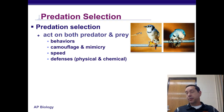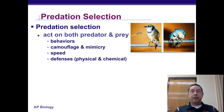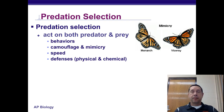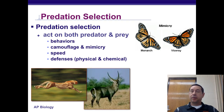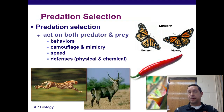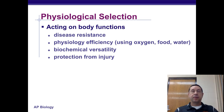A blue jay eats the butterfly, gets sick, and learns not to eat that type again. Mimic species might look like the bad-tasting butterfly without producing the bad-tasting chemicals — you can see the monarch versus the viceroy butterfly. Other examples include speed like the cheetah, horns for defense, thorns, and chemical defenses like hot chemicals in peppers.